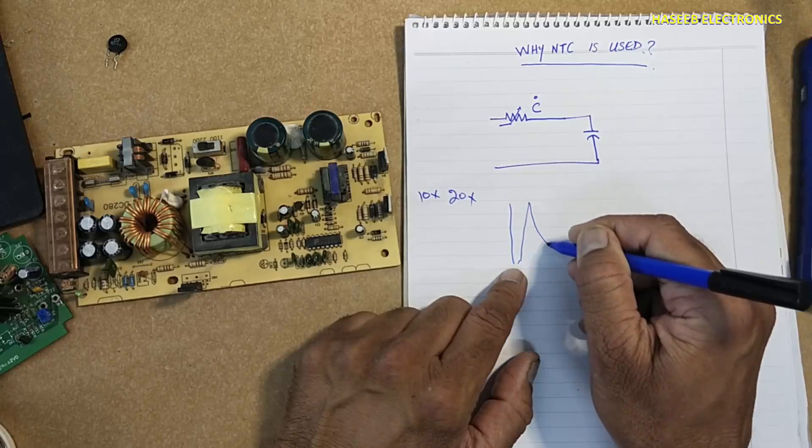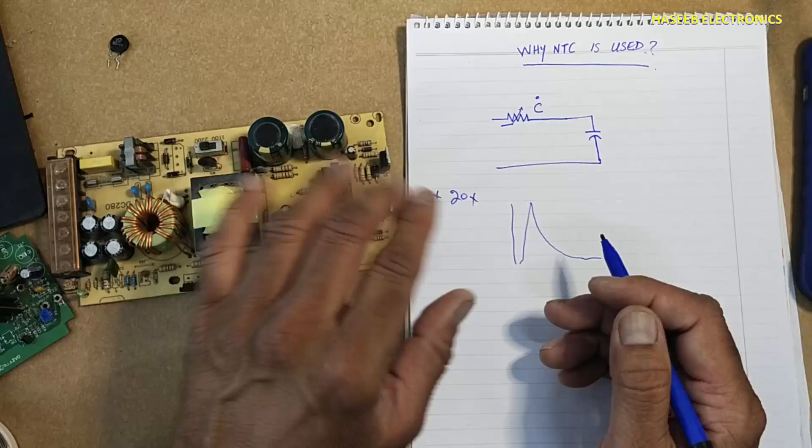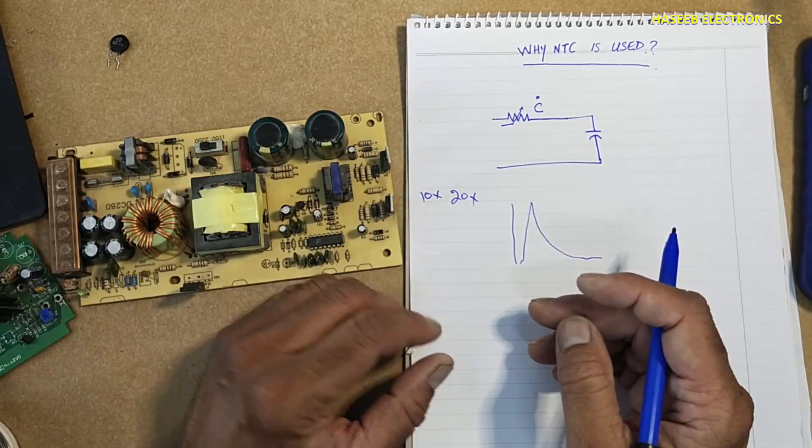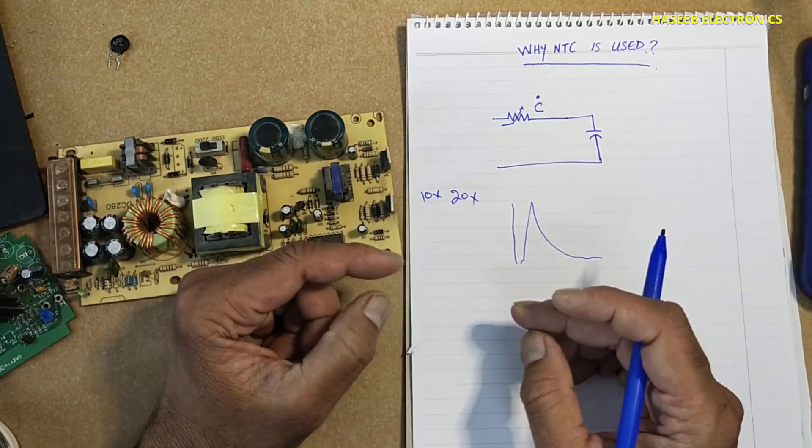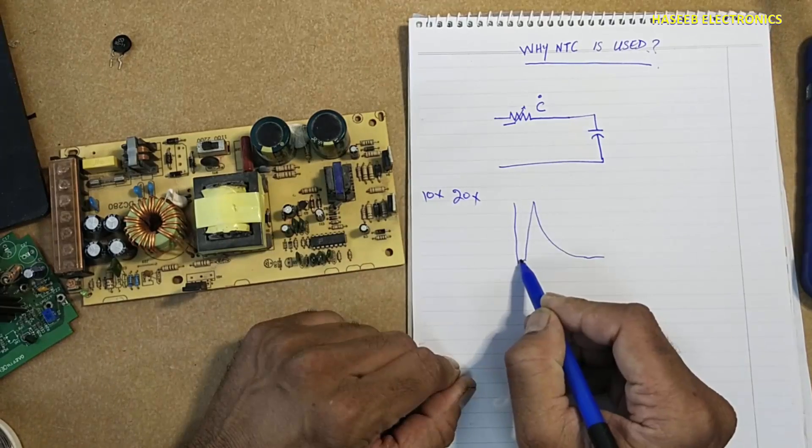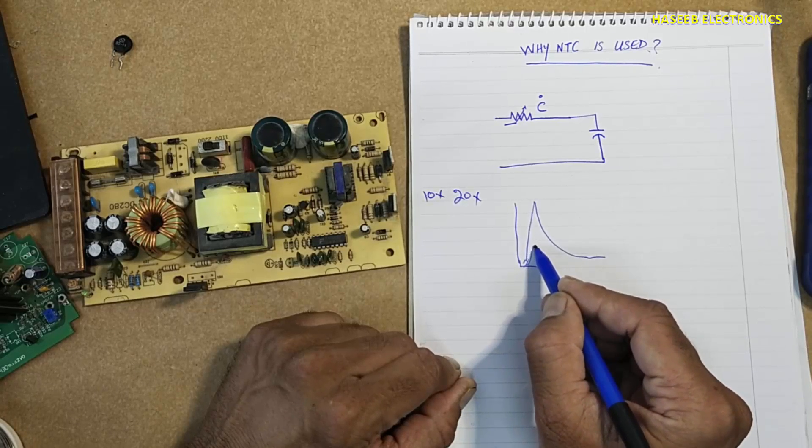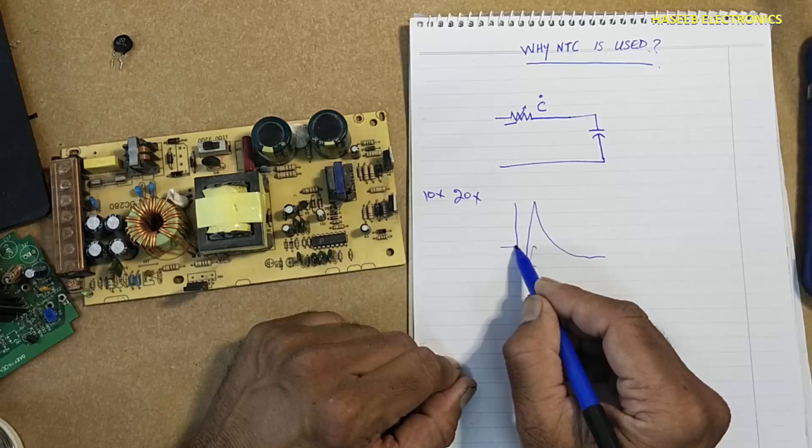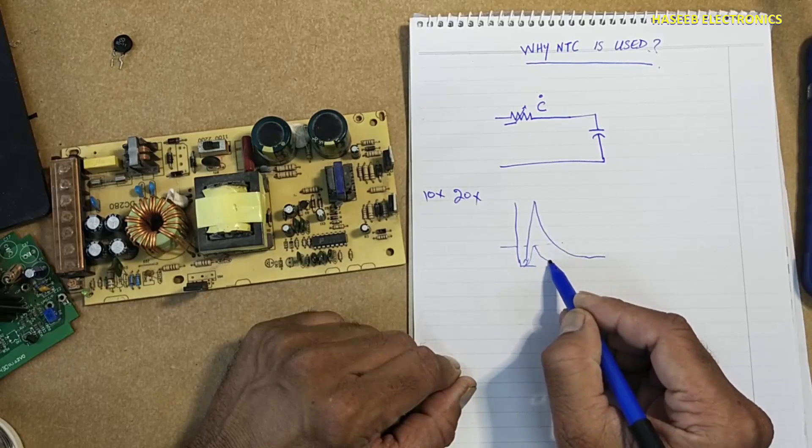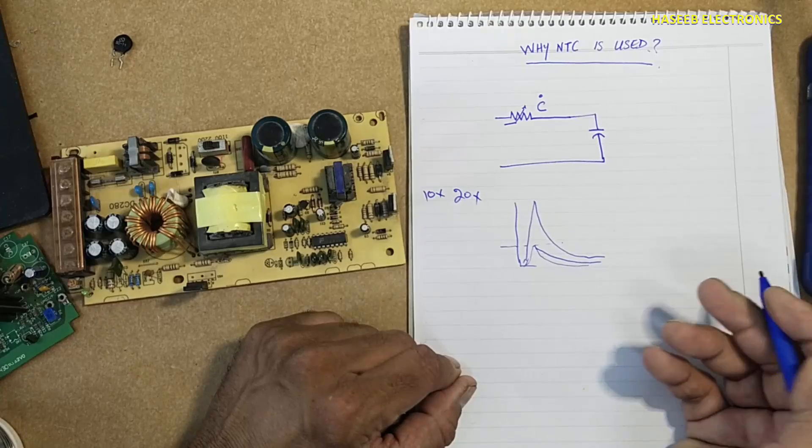If we install any resistor in series, that resistor will be present all the time because its value will not change. But when this current is passed through NTC, its resistance will reach here, so it will allow normal system current. Then the capacitor will start charging normally.